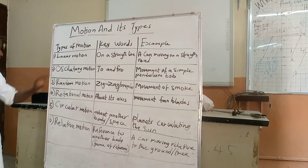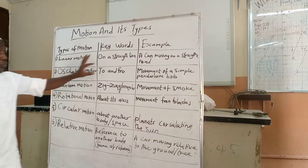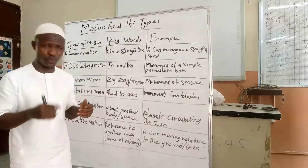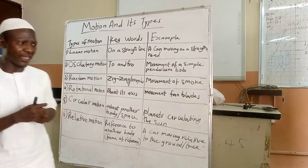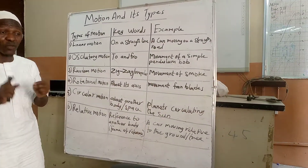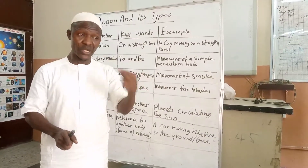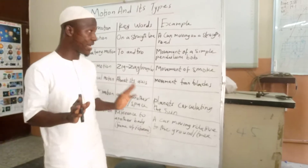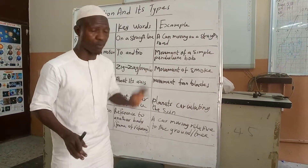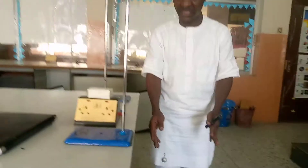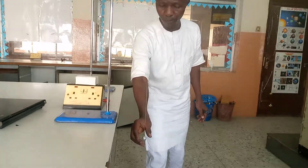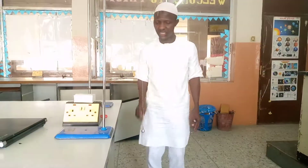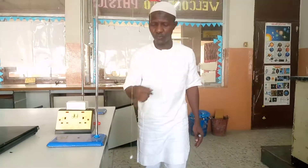Another type of motion is oscillatory motion. The keyword for this one is 'to and fro.' Under this type, the object must go and come back following that same direction it followed when going. Oscillatory motion is the movement of an object in a to-and-fro manner. A good example is the movement of a simple pendulum ball. You displace it and release it — you can see it moving to, fro, to, fro.